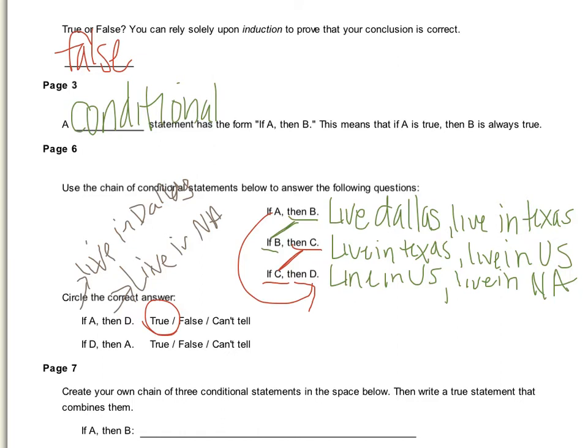But the opposite — if you live in North America, then that means you live in Dallas — is not necessarily true. There is a chance that it is true, just like when we were talking about the teenager and being 16 earlier. If you're 16 then you are a teenager, but if you're a teenager that doesn't always mean you're 16. So you cannot go backwards.